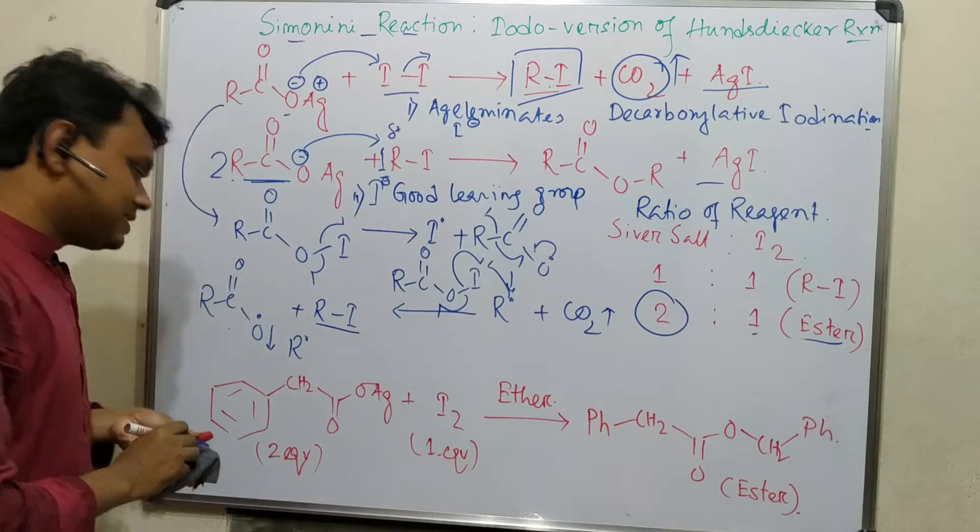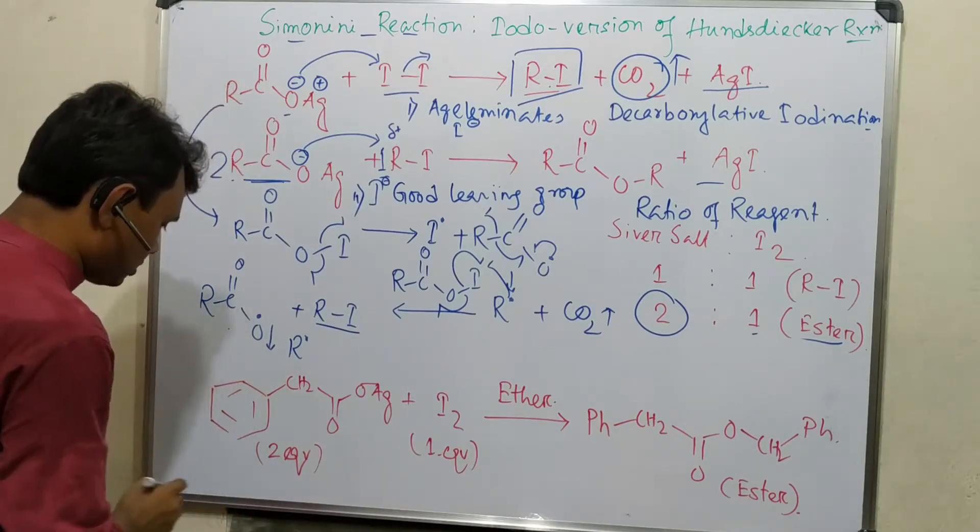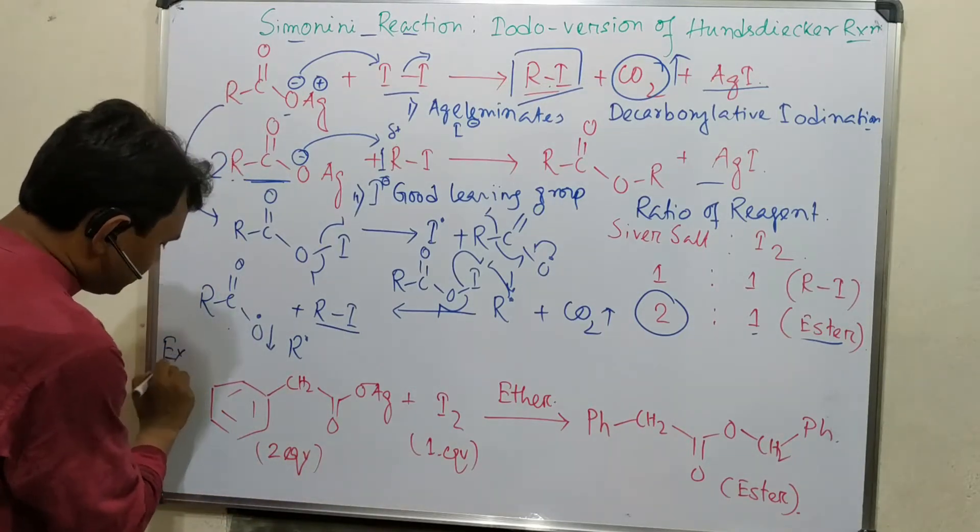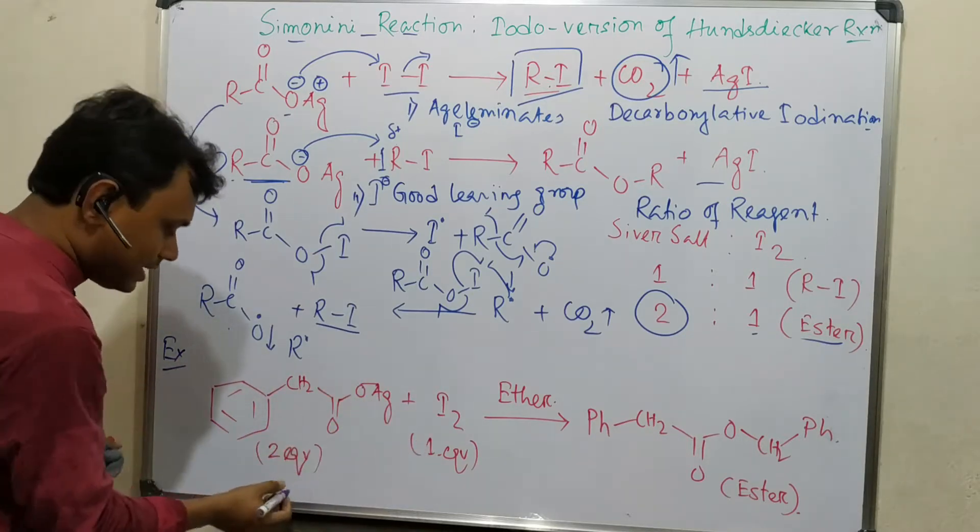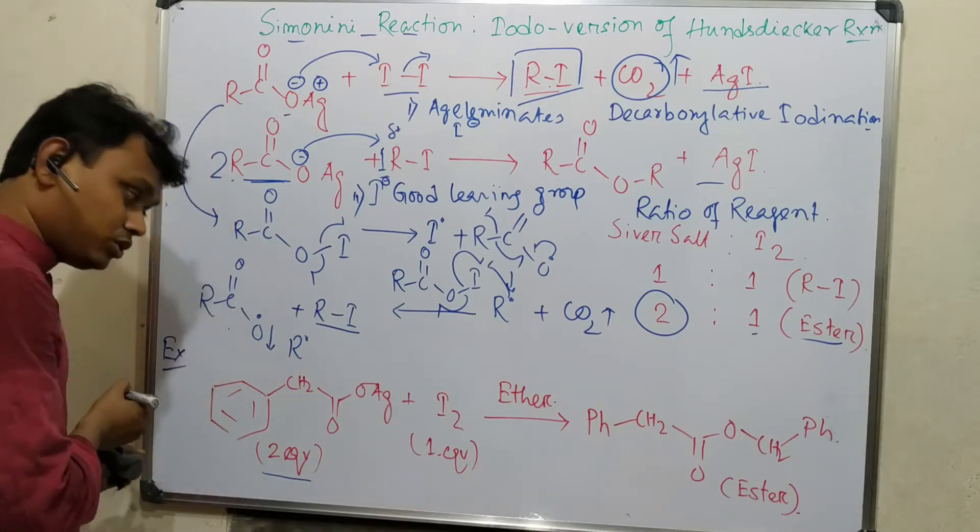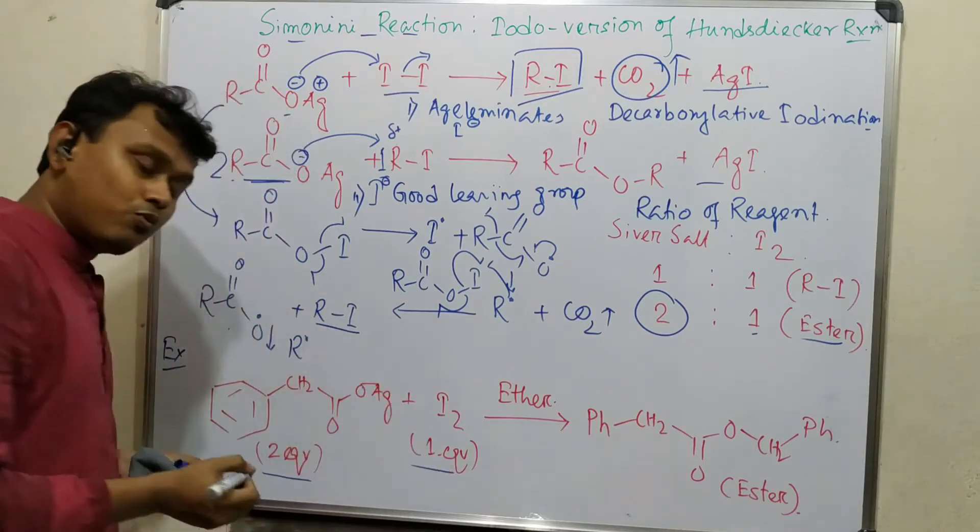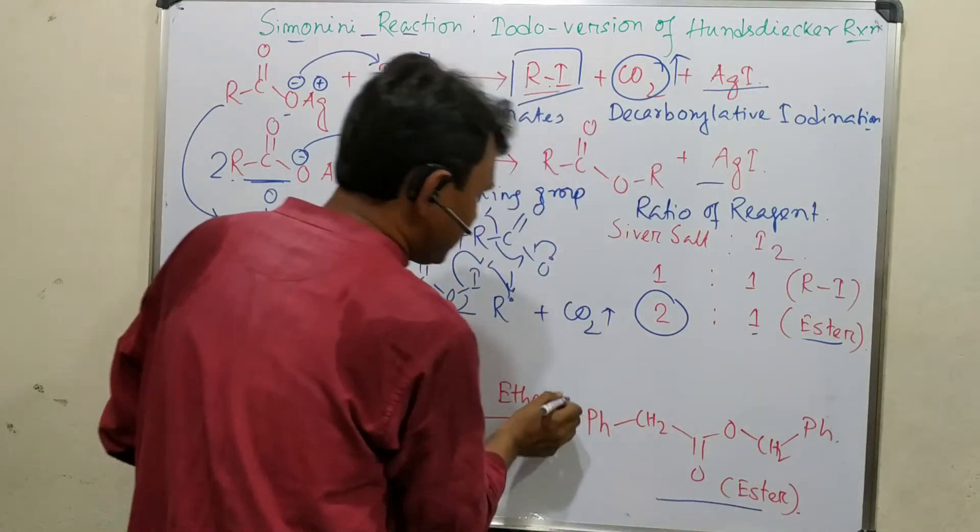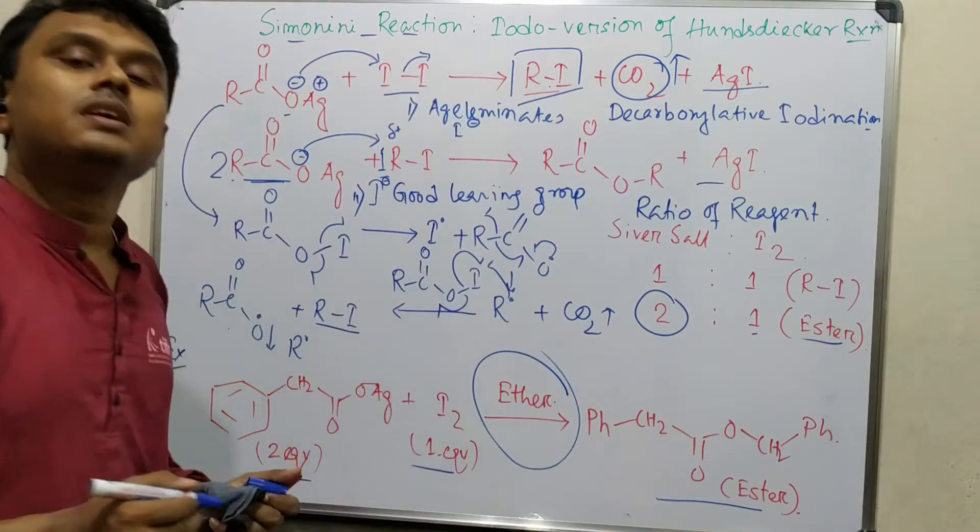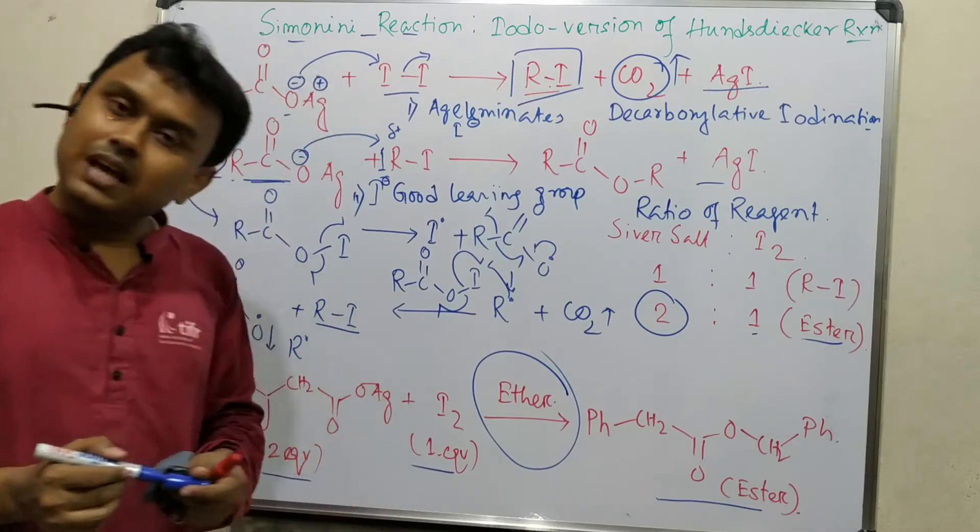Let's discuss one example quickly. Phenyl acetic acid silver salt reacts with iodine. This phenyl acetic silver salt is two equivalents and iodine is one equivalent. So what is expected? It will prepare ester. The ester is prepared and the solvent used in this medium is ether. So this is the end of this discussion.